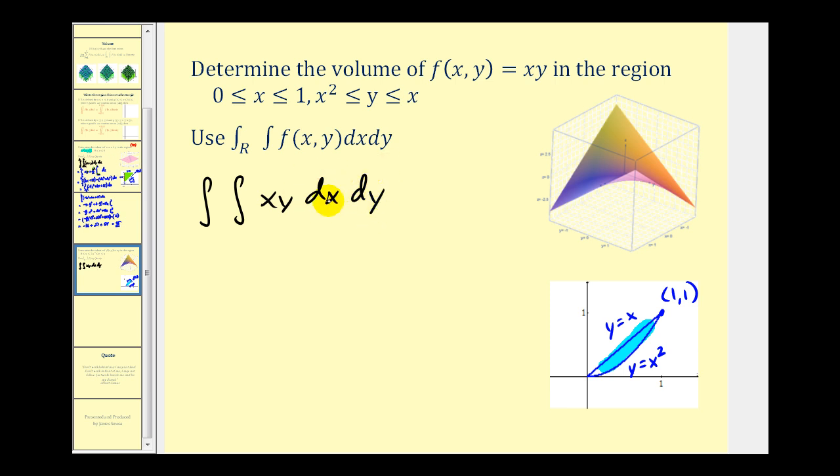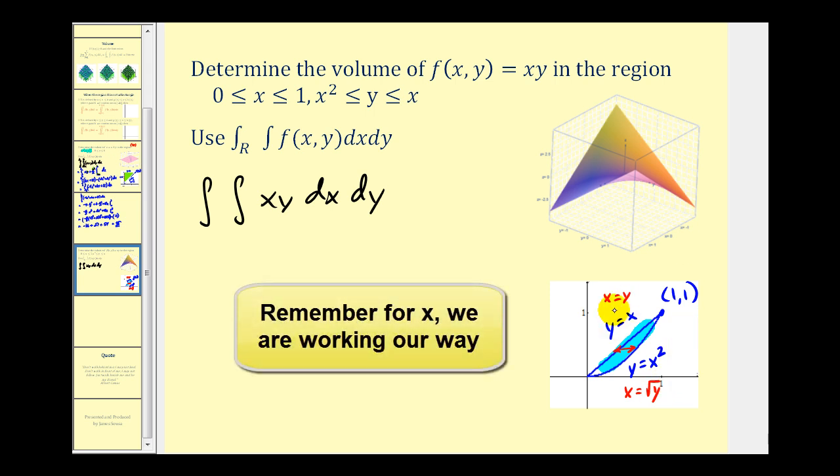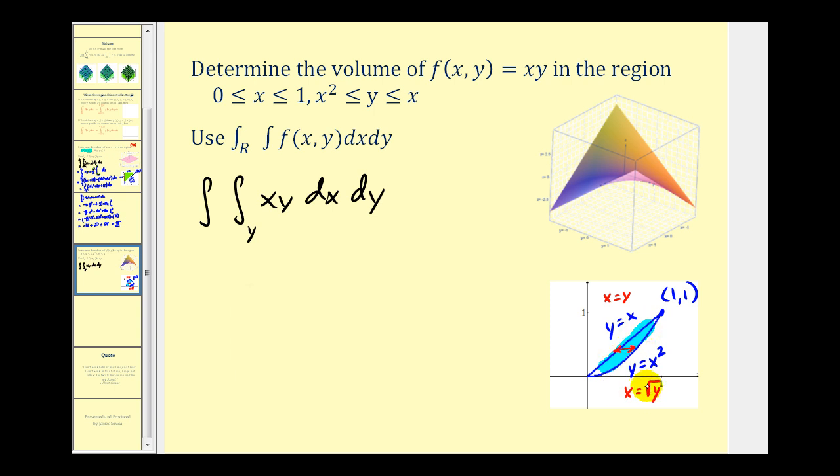Our function is xy and we're going to use dx dy. The limits of integration for x need to be written in terms of y, which means we have to solve these equations for x. This equation is already solved for x: x equals y. Then to solve for x from y equals x squared, we square root both sides to get x equals the square root of y. The lower limit of integration for x is y, and the upper limit is the square root of y. For the limits of integration for y we have from 0 up to 1.